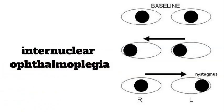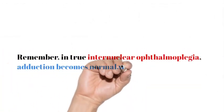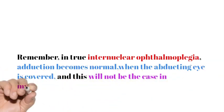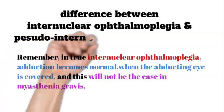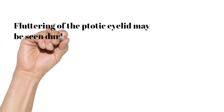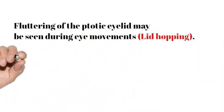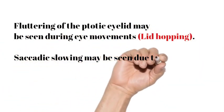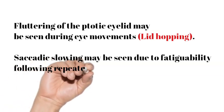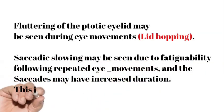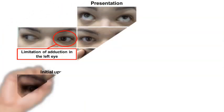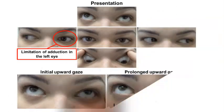Remember, in true internuclear ophthalmoplegia, adduction becomes normal when the abducting eye is covered, and this will not be the case in myasthenia gravis. Fluttering of the ptotic eyelid may be seen during eye movements — lid hopping. Saccadic slowing may be seen due to fatigability following repeated eye movements, and the saccades may have increased duration. This is termed intersaccadic fatigue.